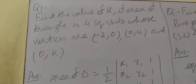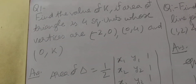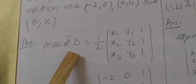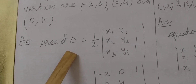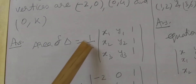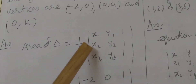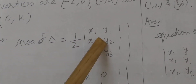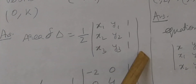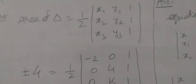We have to find the value of k. The area is given. We know that the area of a triangle formula in determinant is: half times the determinant with rows x1, y1, 1; x2, y2, 1; x3, y3, 1.